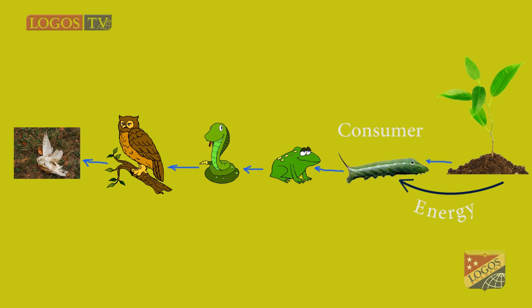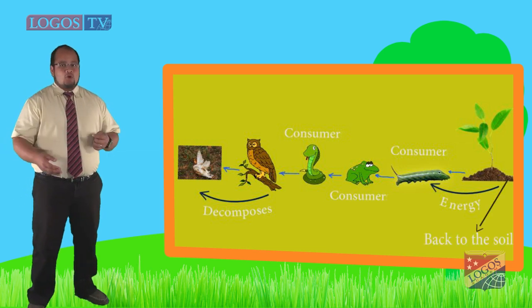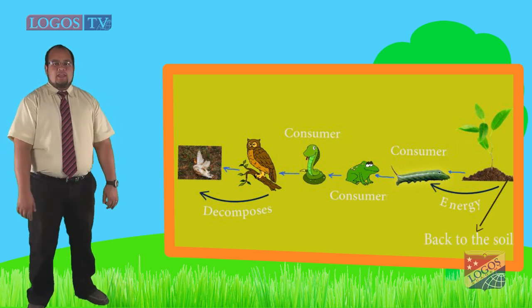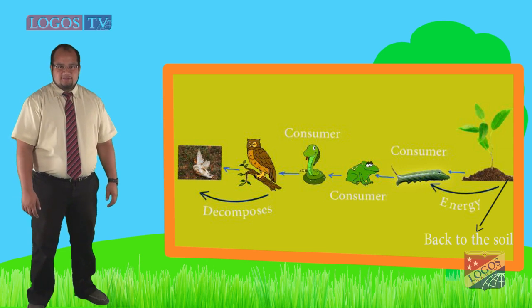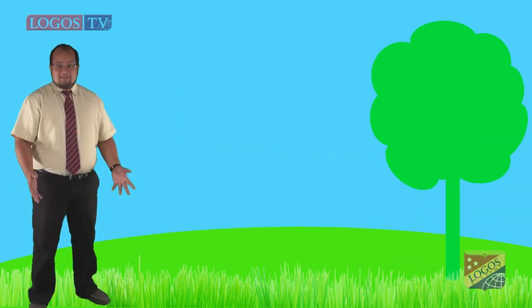The frog and the snake are also consumers. Finally, the snake is eaten by an owl. When the owl dies, it decomposes and is broken down and used by bacteria and fungi. These nutrients go back to the soil and are used again by plants. The chain starts all over again.